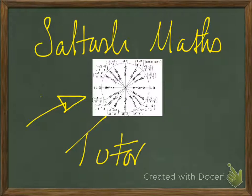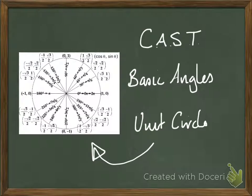Hi everybody, it's Saltash from Maths Tutor and today we're going to be dealing with this nasty little sucker which is the unit circle and all of those horrible angles. It looks like a numeric car crash but you are going to be able to do it in seconds — well, maybe a minute or two — but it's going to be really easy. By the end of this video you'll understand what CAST is, the basic angles, applicable to O level and definitely A level, and how to generate all of this unit circle.